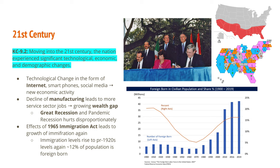Moving into the 21st century, the nation experienced significant technological, economic, and demographic changes. Technological changes came in the form of the internet, smartphones, and social media, leading to new economic activity. We saw this in the 1990s with the dot-com boom and later the dot-com bust, but technology has generally had a positive effect on the U.S. economy. There was a decline of manufacturing, a growth of service sector jobs, and a growing wealth gap between those in white-collar versus blue-collar positions.